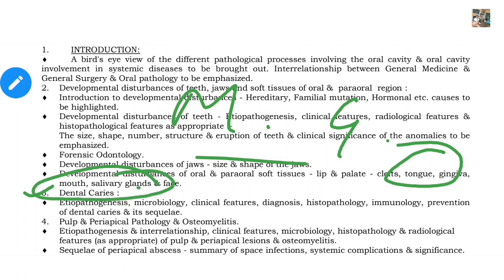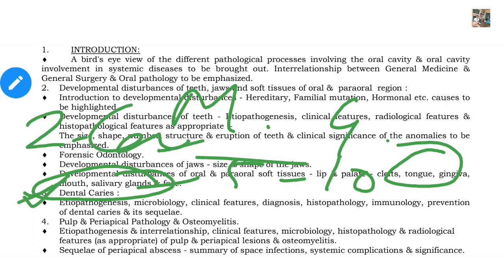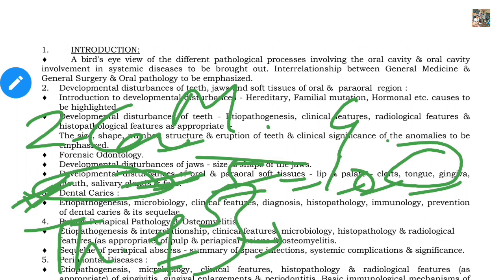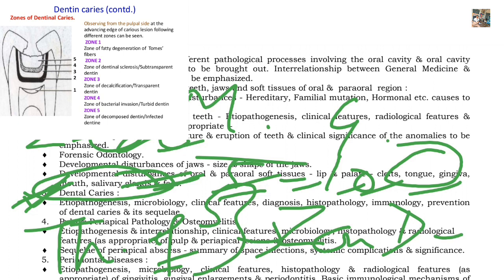Dental caries can carry 5 or 10 marks, and especially the definition you should remember word by word — which you may have covered in second year in conservative dentistry. If you have a question about dental caries, you have to write the etiopathogenesis — what is the reason. You have to write theories for dental caries, around 3-4 theories. Additionally, clinical features, diagnosis, histopathology, immunology, and prevention of dental caries.